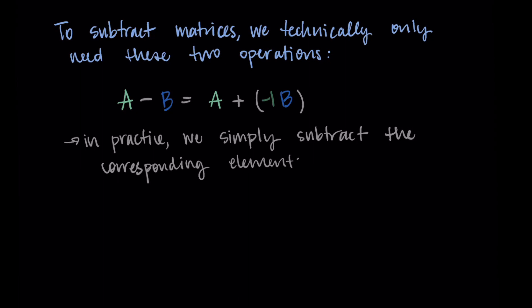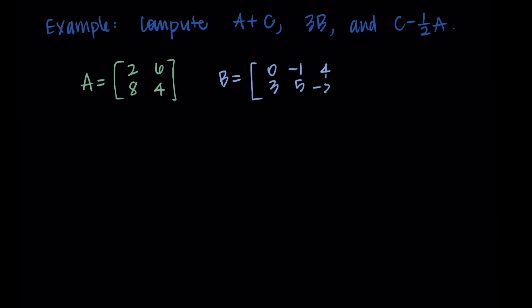We subtract the corresponding elements of the matrices in the same way we would add them for addition. All right, let's go through some examples. Let's compute A plus C, three B, and C minus one half A. And let's consider the matrices A equals [2, 6, 8, 4], B equals [0, -1, 4, 3, 5, -2], and C equals [2, 0, 1, -1].